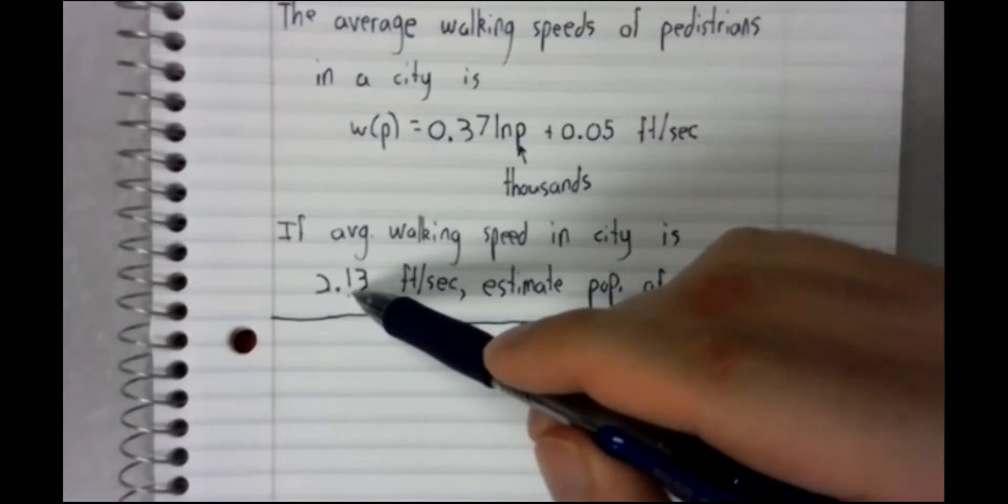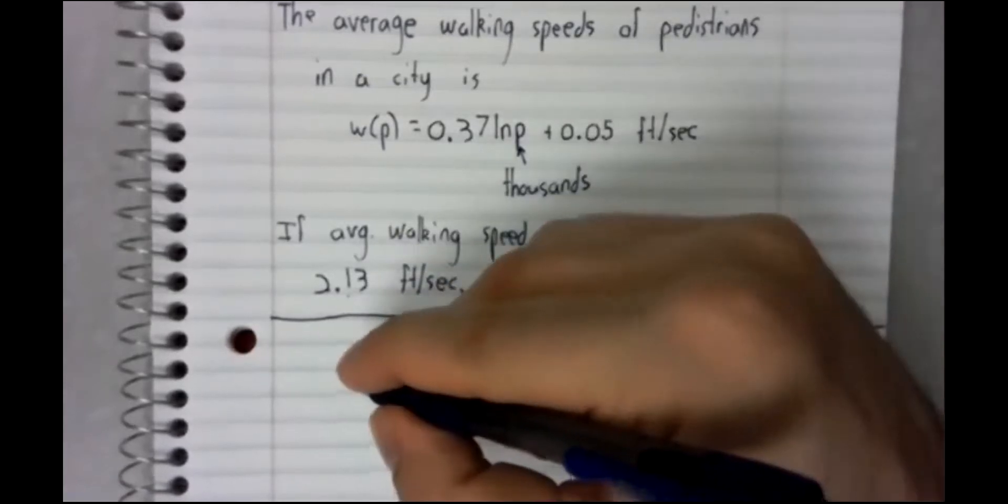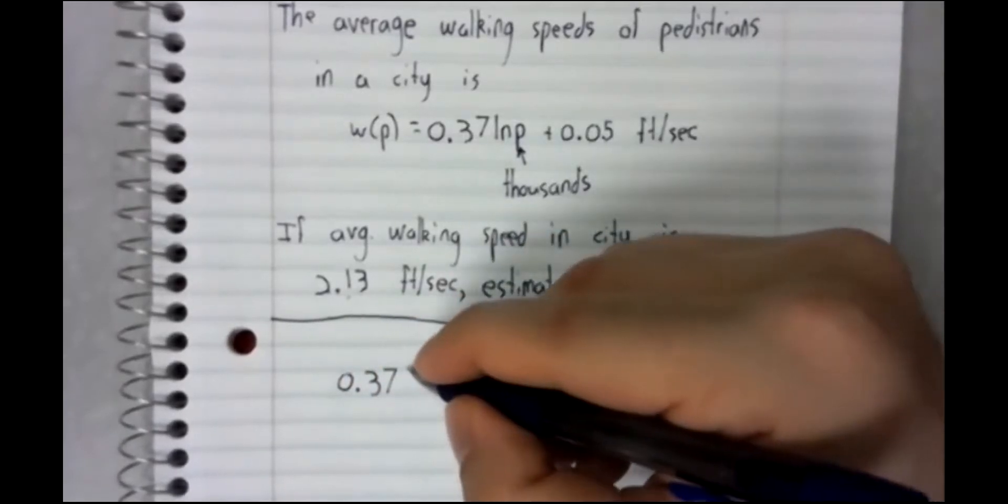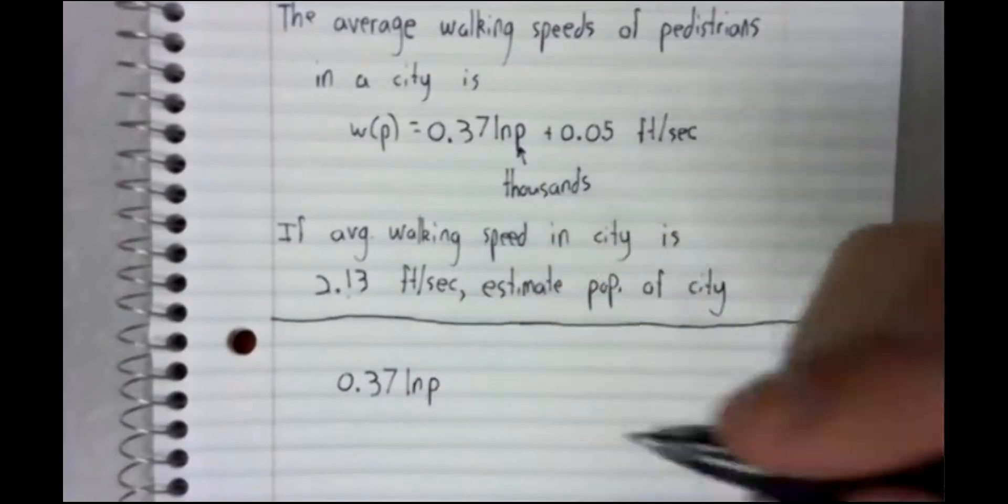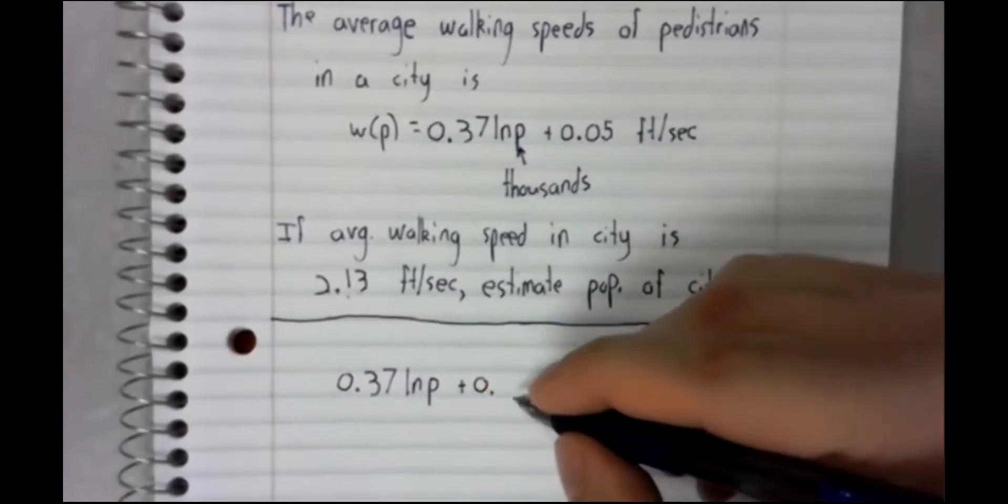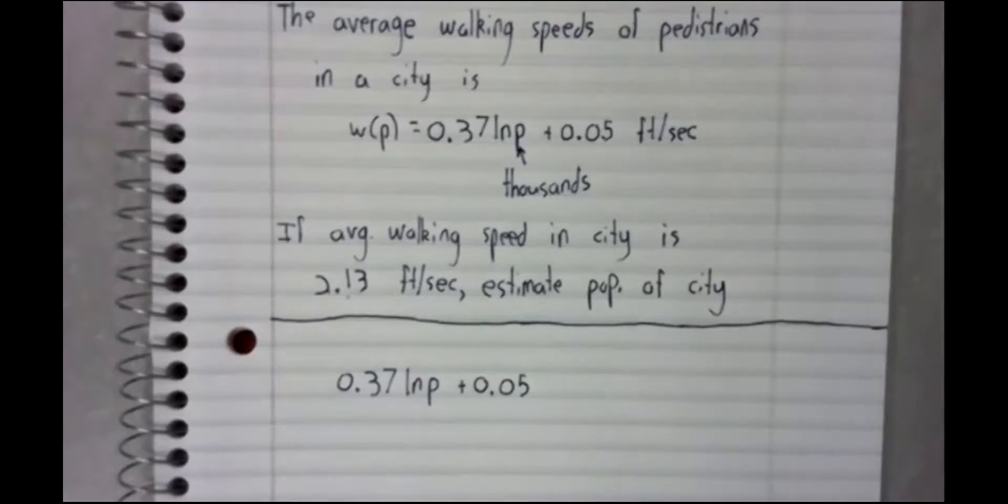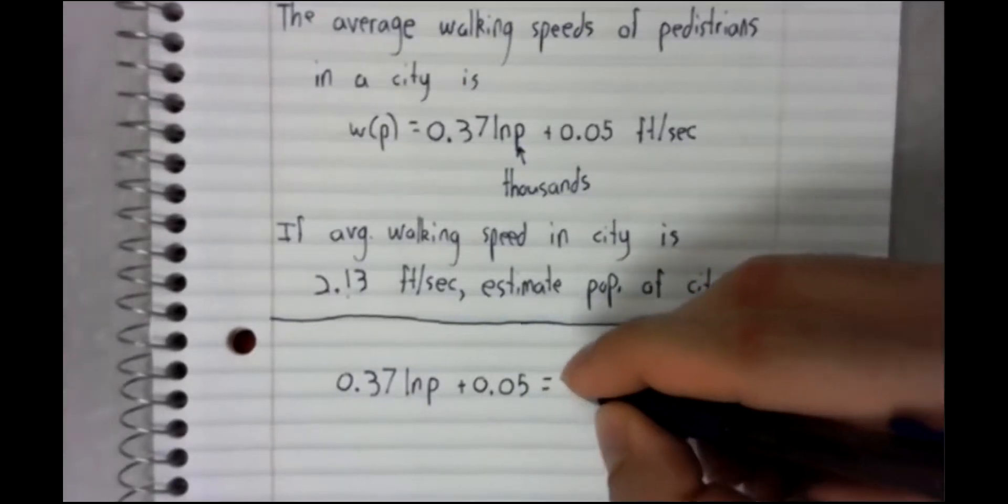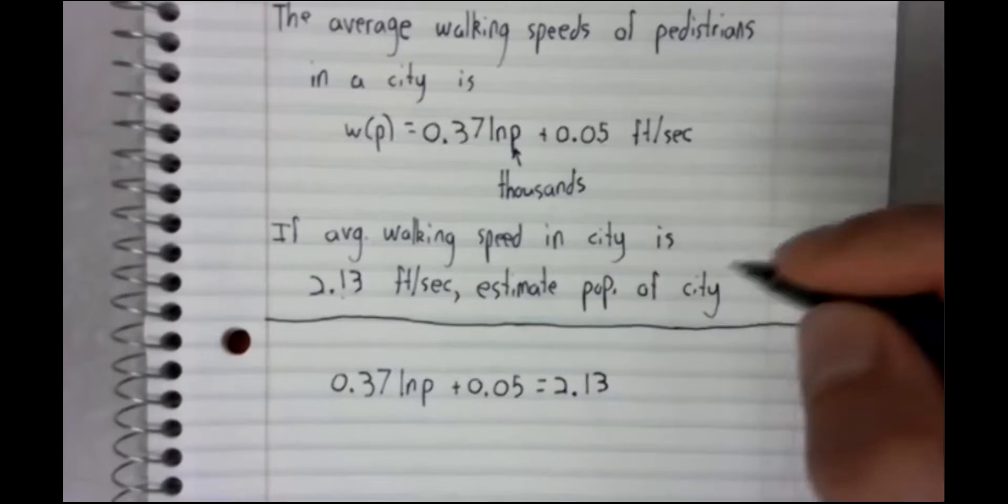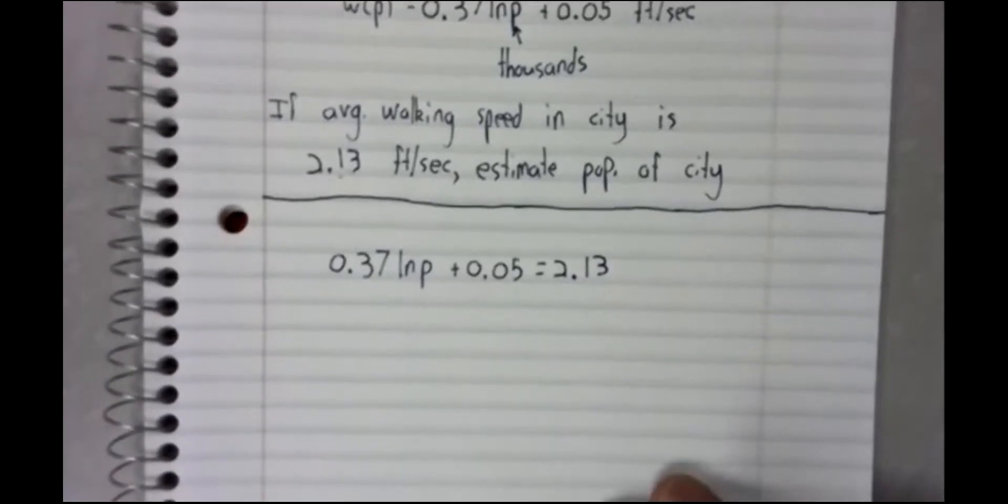We want to set it equal to 2.13. 0.37 times the natural log of P plus 0.05, the average walking speed. The average walking speed is 2.13 feet per second.